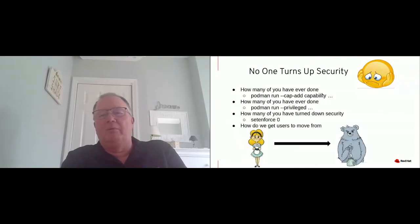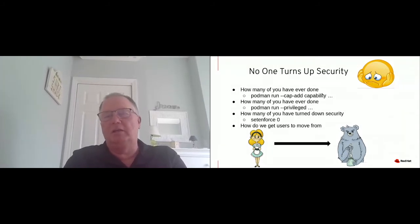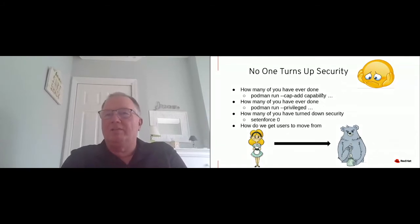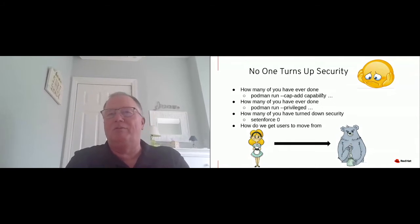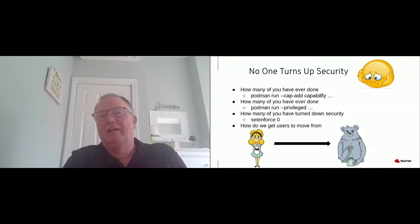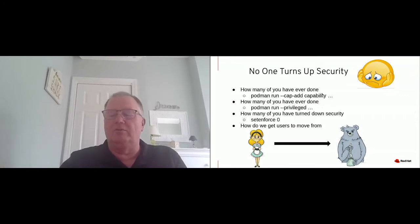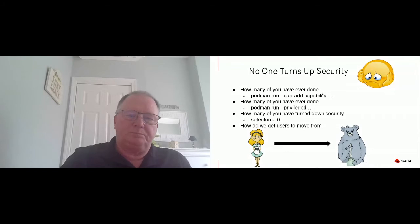The bottom line with container security is people take the defaults or they turn it off. Anytime people come into the equation, those are really the two choices. So we go with the medium level — the Goldilocks middle ground. The rest of this talk is about how do I move from Goldilocks towards Papa Bear? How do I get users to run more securely without the users having to do anything? Because if the users have to do anything, all they're going to do is turn things off.